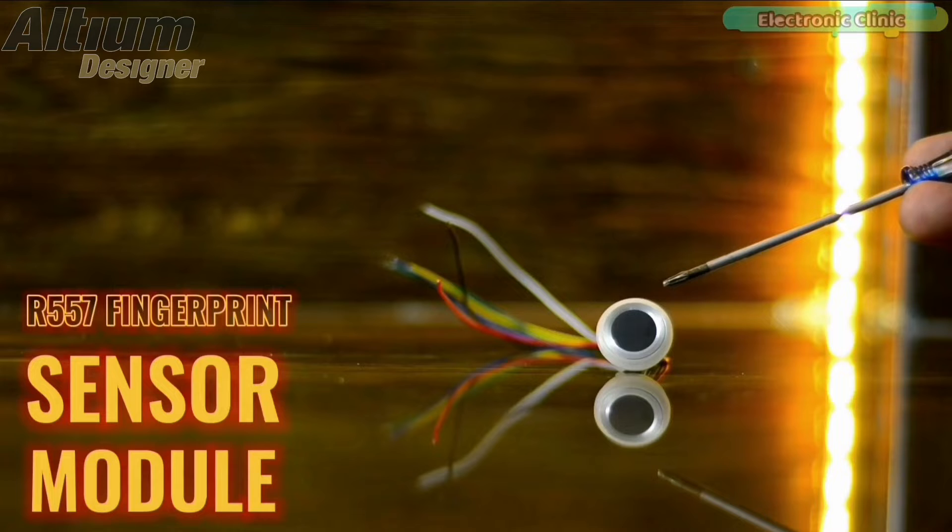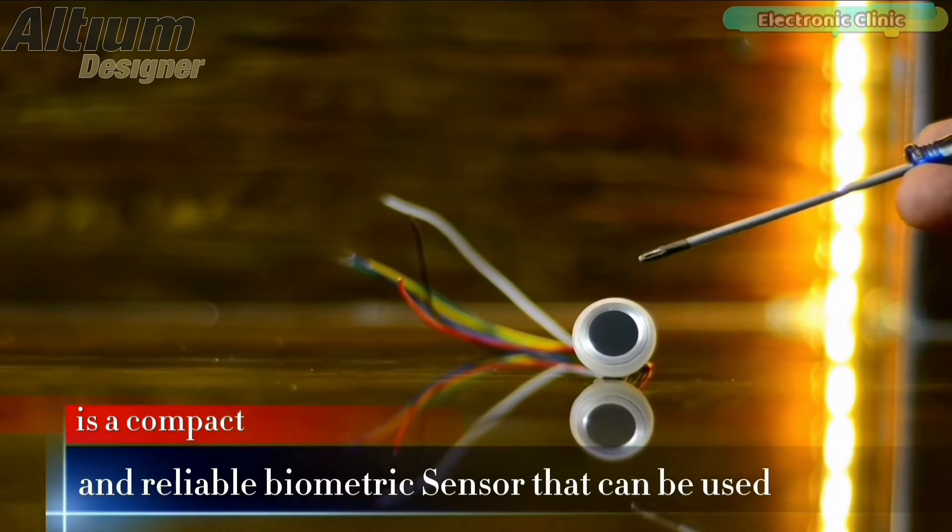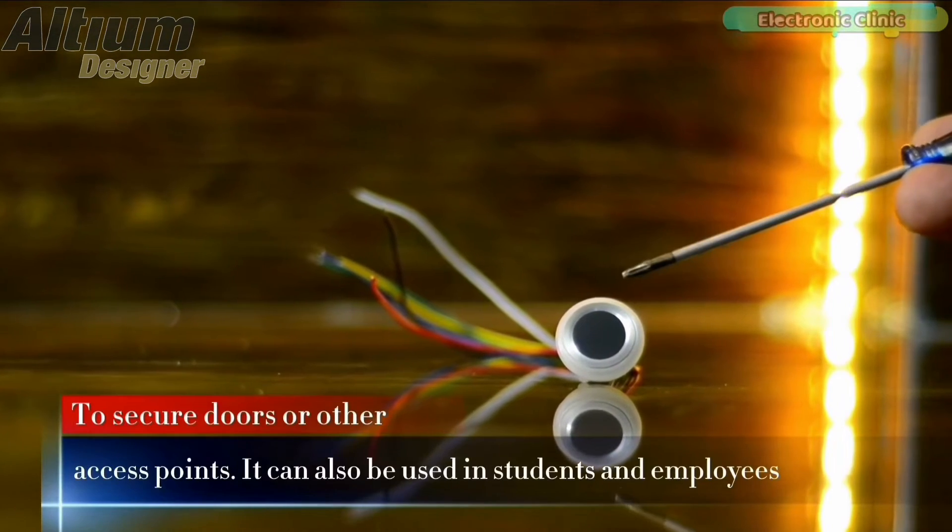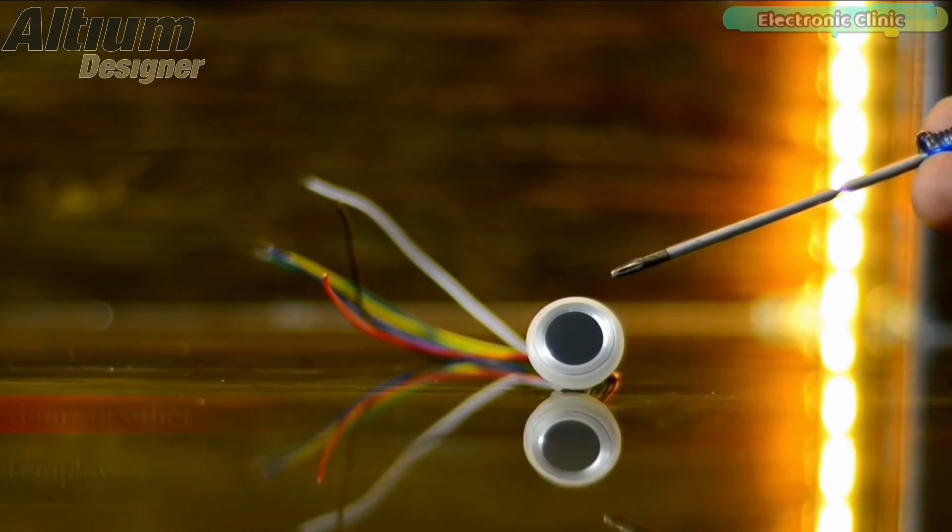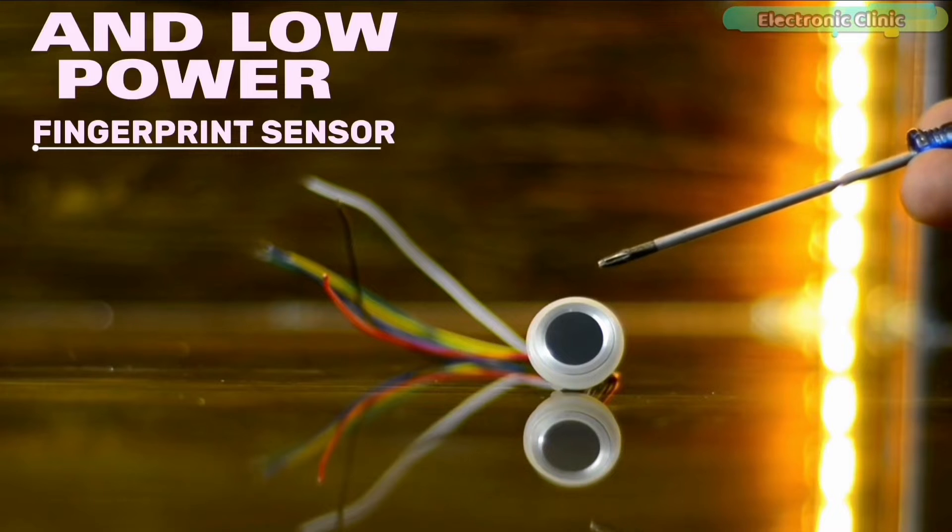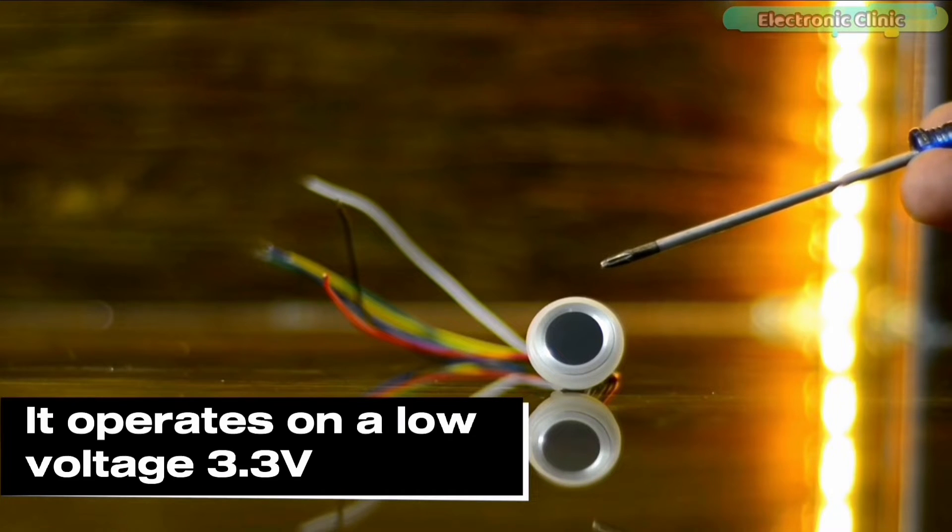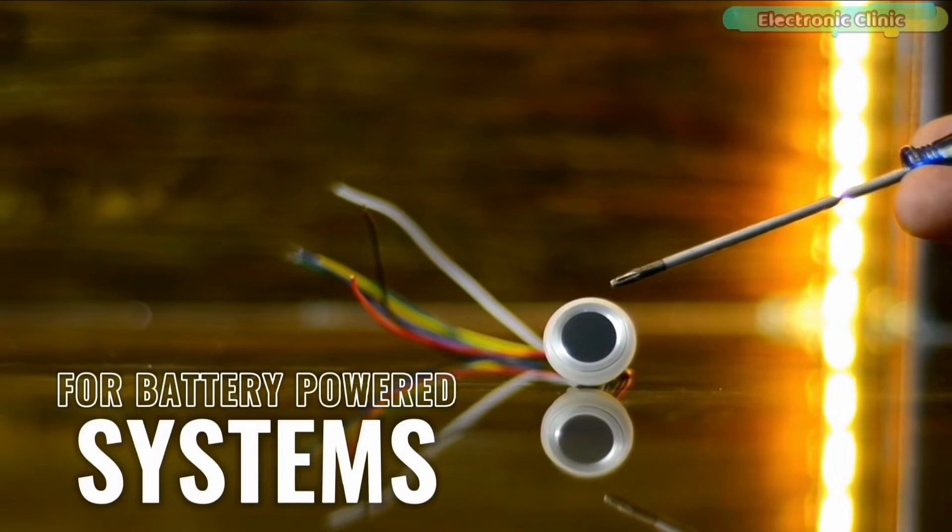The R557 fingerprint sensor module is a compact and reliable biometric sensor that can be used to secure doors or other access points. It can also be used in students and employees attendance system. It's a low cost and low power fingerprint sensor. It operates on a low voltage of 3.3 volts making it ideal for battery powered systems.